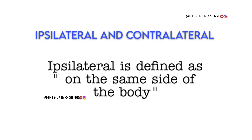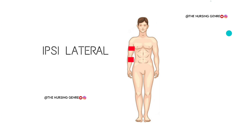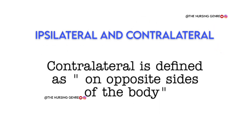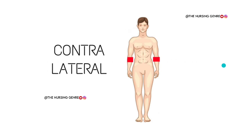Next difference: ipsilateral and contralateral. Ipsilateral is defined as on the same side of the body. If we choose the same side of the body, we call it ipsilateral. Here we can show it in the picture — same side shown with two red marks. Contralateral is on the opposite side of the body, so we call it contralateral.